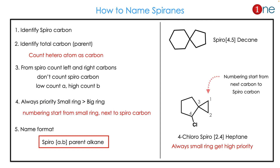How to name a spiro compound? It is easy — you have to follow a step-by-step procedure. First, identify the spiro carbon, which is normally a quaternary carbon. Then find the total carbons present, which gives us our parent alkane. Important: hetero atoms must also be counted as carbons. Then count the carbon atoms on the left side and right side — the lower count is given as 'a' and the higher count is given as 'b'.